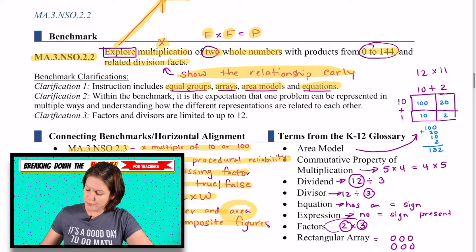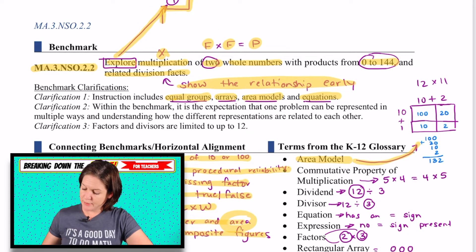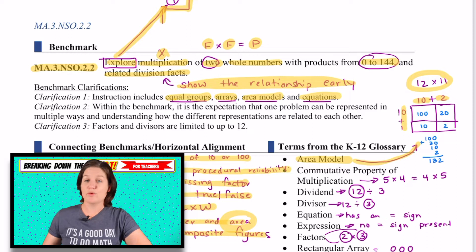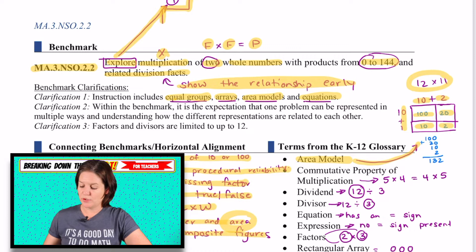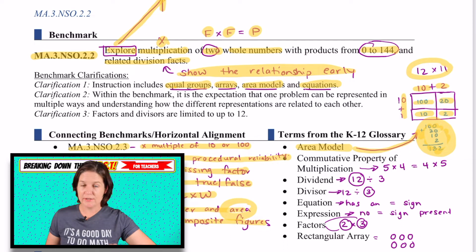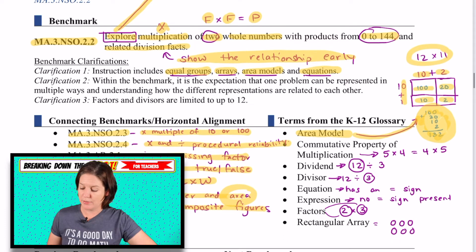Some terms that you need to know. Area model — I've drawn an area model right up here. You can see that if we had 12 times 11, we could break that into 10 plus 2 for 12, and 10 plus 1 for 11. Then 10 times 10 is 100, 10 times 2 is 20, 1 times 10 is 10, and 1 times 2 is 2. When you add all of those up, you get 132. So that is the area model — it's big in fourth grade, and we do start it now in third grade.